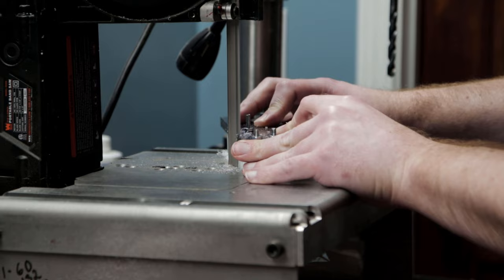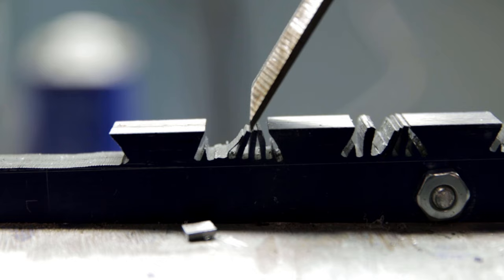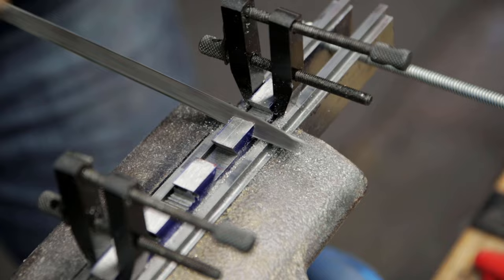So now I'm on to the dovetails and I'm using the bandsaw to remove most of the waste. Now I'll come in with a chisel and I can knock out all those tabs pretty easily. This is fairly similar to working with wood. You're just laying out a line and then you're working up to that line. Instead of using a chisel I'm just using a file.